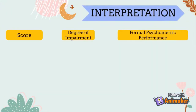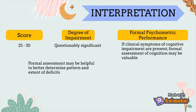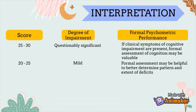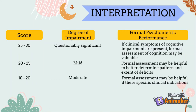For the interpretation: if the client scores between 25 to 30, the degree of impairment is questionably significant, and if clinical symptoms are present, formal assessment of cognition may be valuable. A score of 20 to 25 indicates mild impairment, and formal assessment may help determine the pattern and extent of deficits. A score of 10 to 20 indicates moderate impairment, and formal assessment may be helpful if there are specific clinical indications. A score of 1 to 10 indicates severe impairment, and the patient is not likely to be testable.